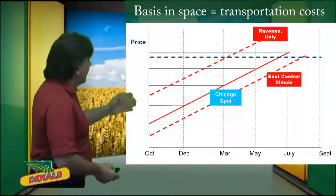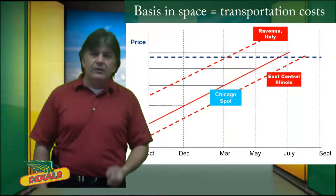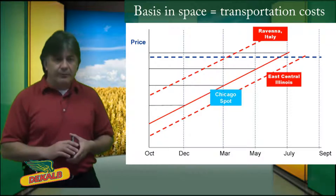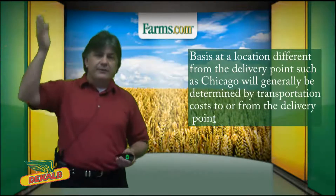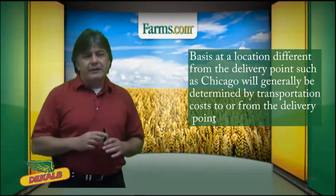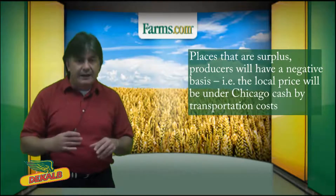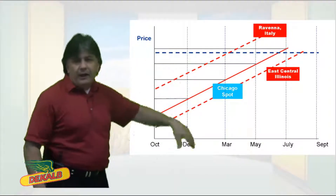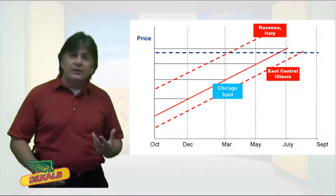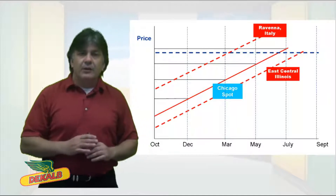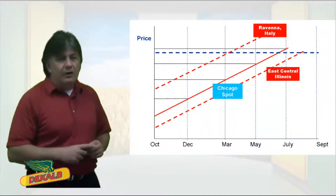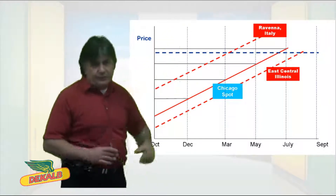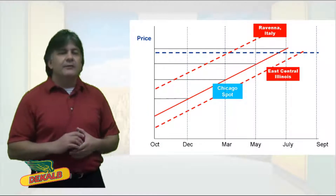Now let's talk about basis in space. Basis in space is simply equal to the transportation cost. The spatial component of basis at a different delivery point equals the transportation cost to and from that non-delivery point. Basis at a location different from Chicago will generally be determined by the transportation cost to and from that delivery point. Places that are at surplus will have a negative basis — the local price will be under Chicago cash by transportation costs. East Central Illinois is a surplus producer, so local cash will be below Chicago. Ravina, Italy is a deficit producer, so the price would have to be high enough to move that grain to Italy.